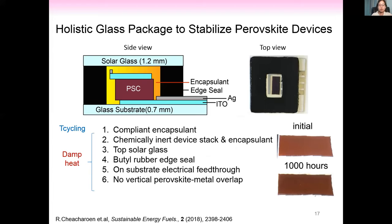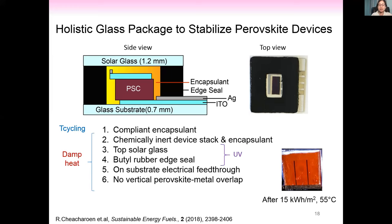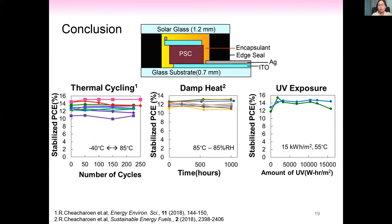Q&A on scaling up to industrial scale: The 15 mm wide edge seal width was chosen based on Mike Kempe's silicon work showing 15 mm is sufficient to delay water ingress for 25 years. When talking about 14–40 watt modules, 15 mm is definitely small. The laminator used is a normal commercial laminator — you put the edge seal around, add the encapsulant and glass, and use normal industrial processing. You just need to carefully select the four components of the package.